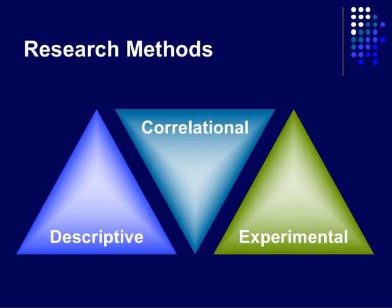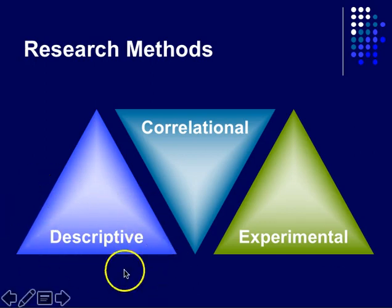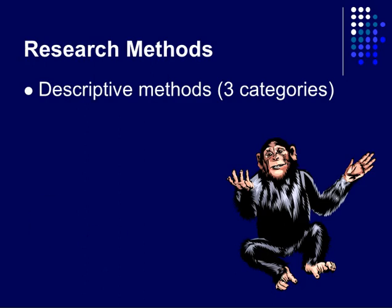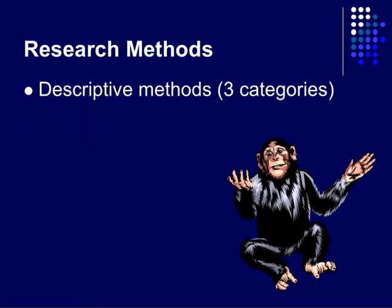Let's move on to research methods. We're going to look at just the descriptive category — you can see three categories here: descriptive, correlational, and experimental. We are just going to cover the descriptive methods here. There are three categories plus a fourth that can be added, which kind of combines the previous three. And it's a wonderful name — in psychology we sometimes use names that make sense. So what are you doing in descriptive research? You're describing behavior, and there are a variety of ways to do that.